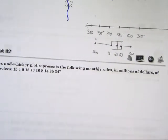The Got It number two. What box-and-whisker plot represents the following monthly sales in millions of dollars of audio devices?